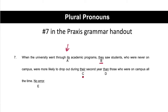I'm going to slow down with they and their because they're probably trying to trip me up. Let's look at A first: 'when the university went through its academic programs.' Its is the pronoun, and it's talking about university. University is what we call the antecedent — the thing the pronoun is talking about. This is pronoun-antecedent agreement.